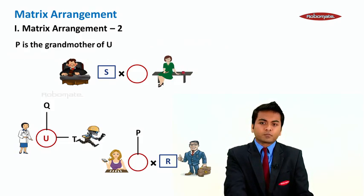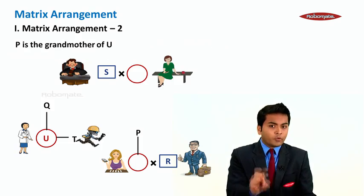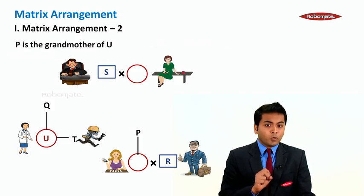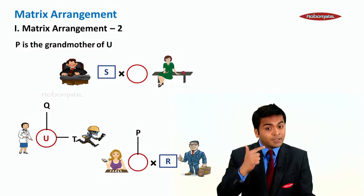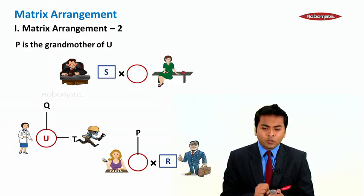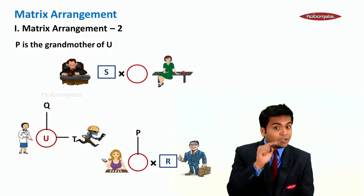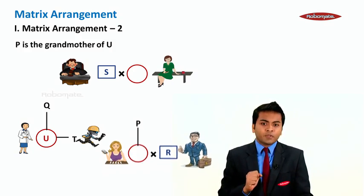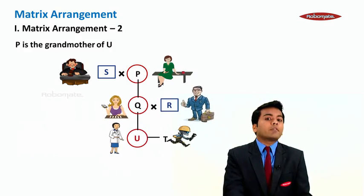The next statement: P is grandmother of U. Now, from this statement, we can make one conclusion that P is in first generation and U is in third generation. And using this cluttered diagram, only one possibility is possible where P is S's wife and Q is R's wife.